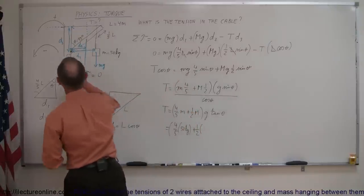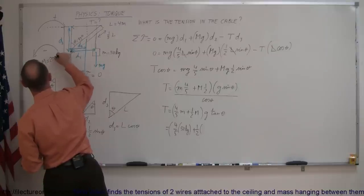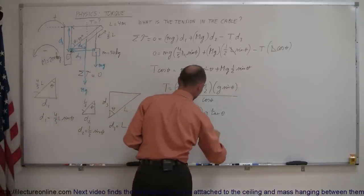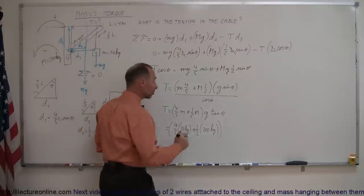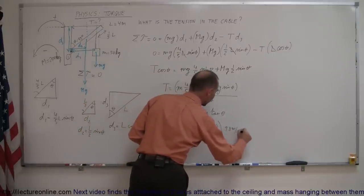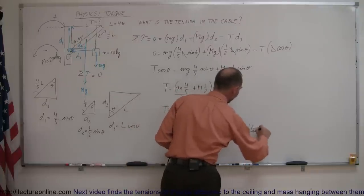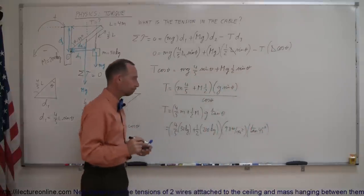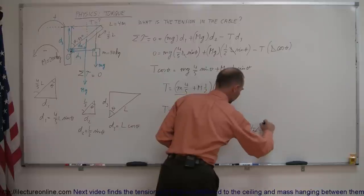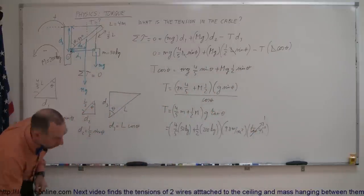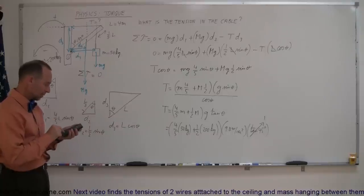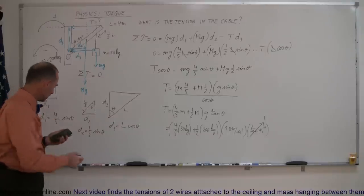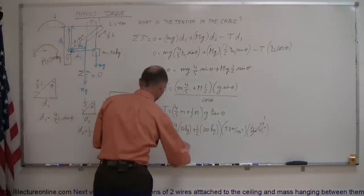Big M is 200 kilograms — that's the mass of the beam. So inside the parentheses we have those values. Multiply that times g, which is 9.8 m/s². Then multiply by the tangent of 45 degrees, which equals 1. Using a calculator: 50 times 4/5, plus half of 200 (which is 100), times 9.8, times 1. The tension in that cable equals 1372 Newtons.